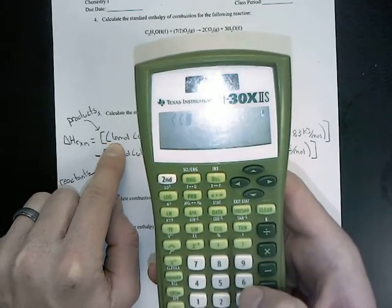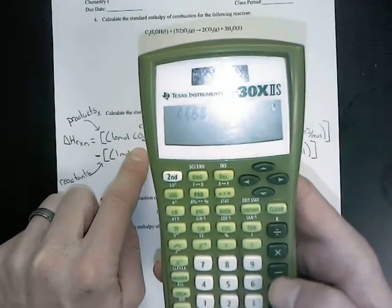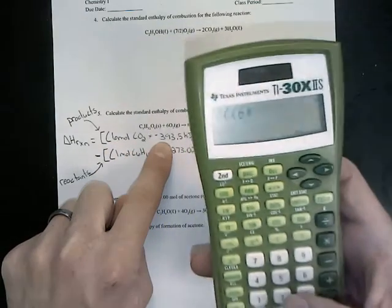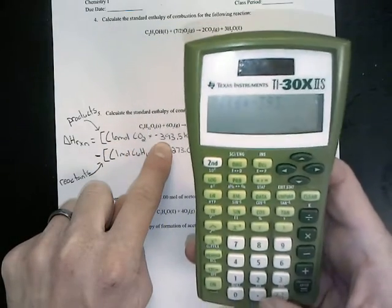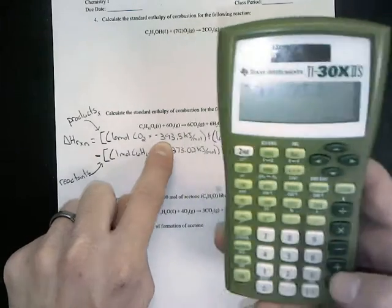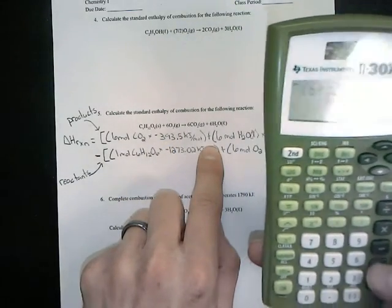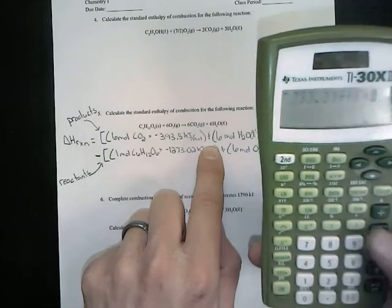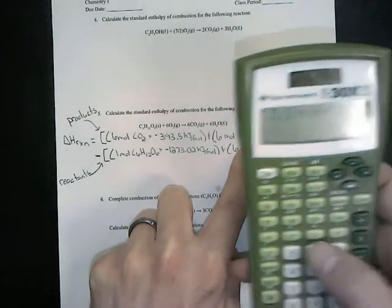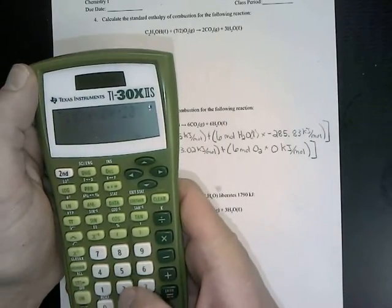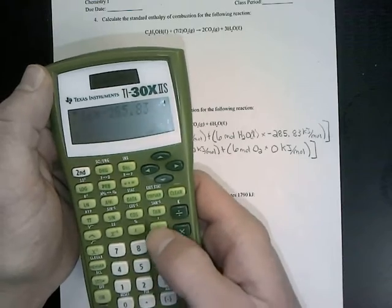Then we're going to type it in just as we see it. So 6 times negative 393.5 parenthesis plus parenthesis 6 times negative 285.83 parenthesis.